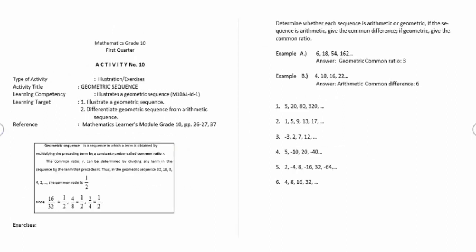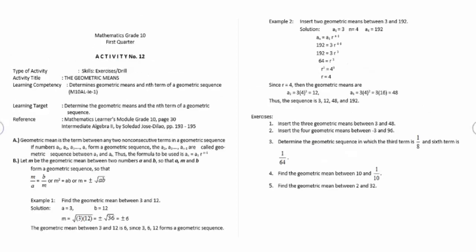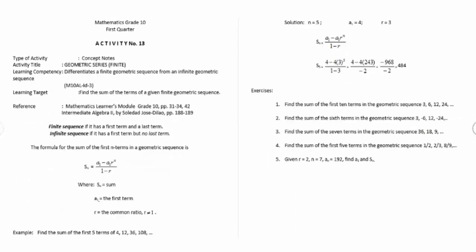Activity number 9: illustrating a geometric sequence. Activity number 10: geometric sequence. Activity number 11: finding the nth term of a geometric sequence. Activity number 12: the geometric means. Activity number 13: geometric finite series.